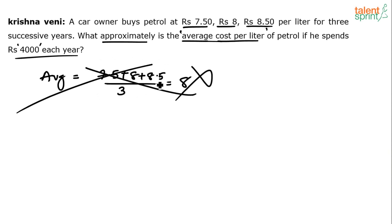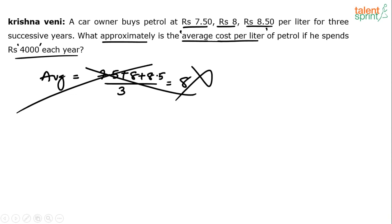If he bought one liter each time, or 10 liters, or 50 liters each time — the same quantity every year — then the simple average of 7.5, 8, and 8.5 would work and give 8 rupees. But here the quantity purchased each year is different, so you cannot solve it that way.